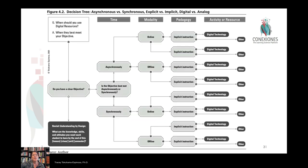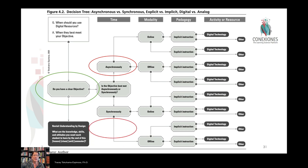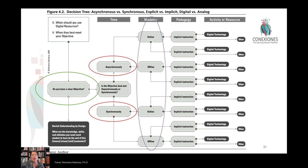Great instructional design means that if you have a clear objective, you can make decisions about modalities. What things should be done asynchronously? For example, individual rehearsal and practice should be done on individual time. But other things are much better when done together as a group, synchronously. Now we also have to think about whether things occur online or face-to-face, whether we have direct instruction or implicit teaching, and whether or not we're supported by digital tools.